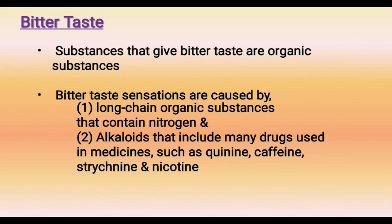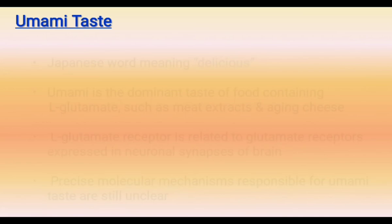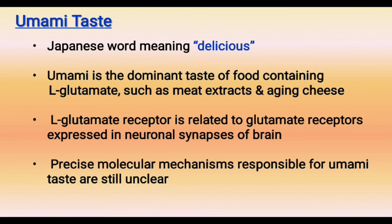The last primary sensation of taste is umami. Umami is a Japanese word that means delicious. L-glutamate foods such as meat extracts and aging cheese produce the umami taste. L-glutamate is the dominant substance producing umami taste. Neurons have glutamate receptors because glutamate is a neurotransmitter, and the L-glutamate receptor is related to the molecular mechanism of umami taste.